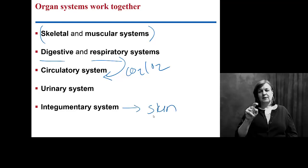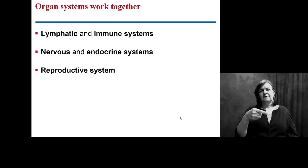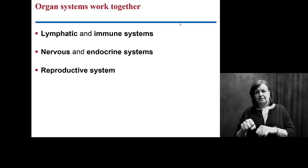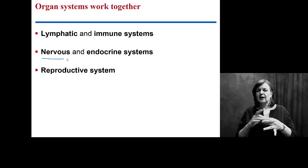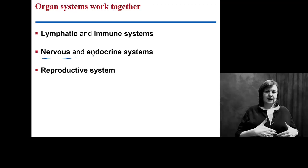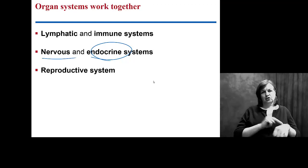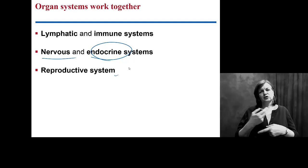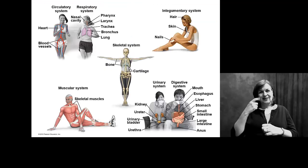The integumentary system is your skin — why is that an entire system? We'll look at that. Lymphatic and immune systems cover all of your defense mechanisms. Nervous and endocrine are very tightly bound systems as well — your nervous system is regulating pretty much everything going on in your body, and your endocrine system is the only thing that can override the nervous system. And then, of course, the reproductive system, because for evolutionary reasons we need to think about the next generation.